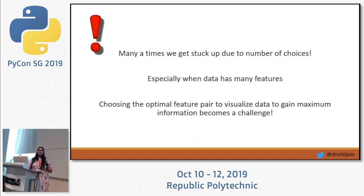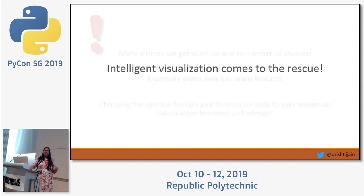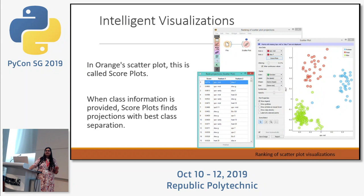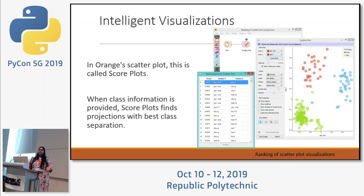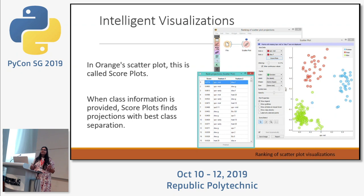Many times we get stuck choosing which features to use to visualize our data. At that point, intelligent visualization comes to our rescue. In Orange, intelligent visualizations are possible through score plots — you can score your data and see which two features have a better score, giving a better pairing for visualization. This will be shown in a demo in a few minutes.